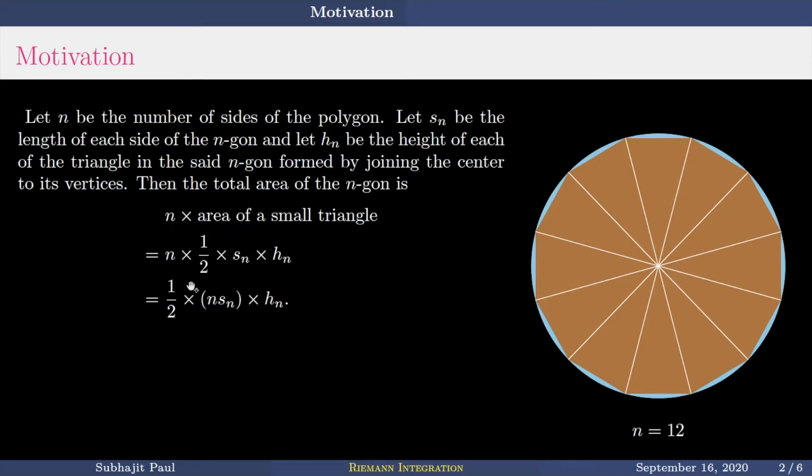That is, we know the area of a triangle is half into base into height. So base is my s_N, that is the length of each side of the polygon, and h_N stands for height, polygon with N sides. So then it becomes half times N times s_N times h_N.